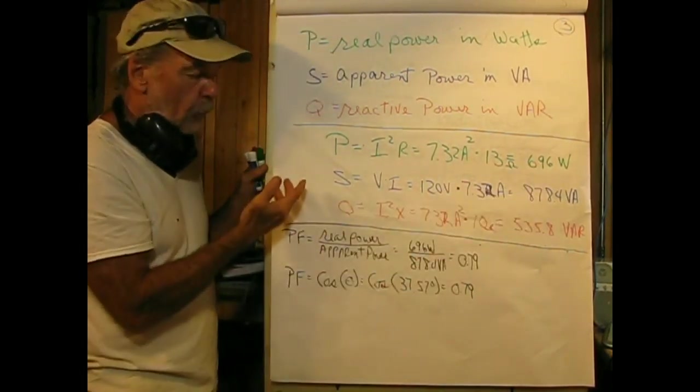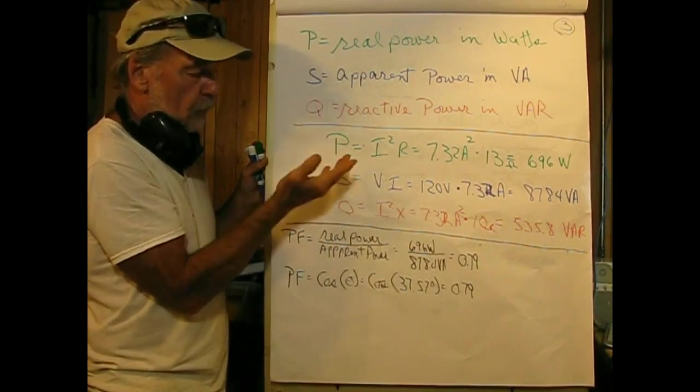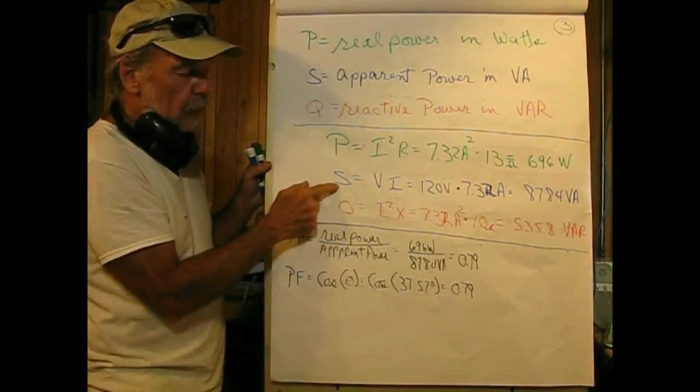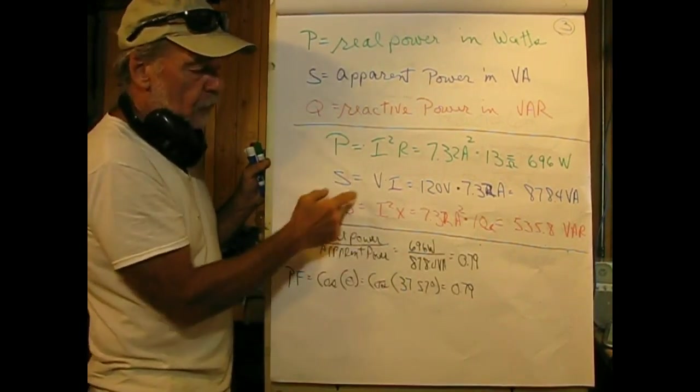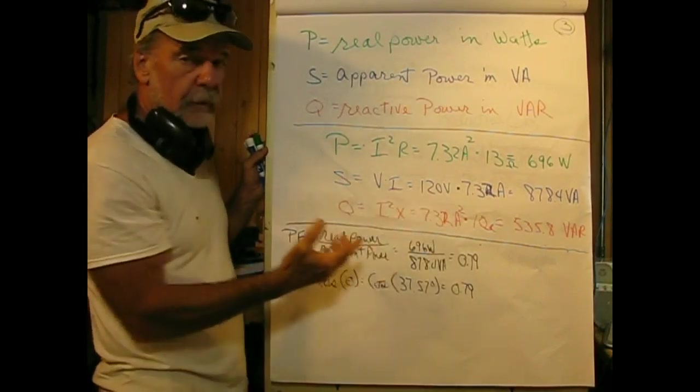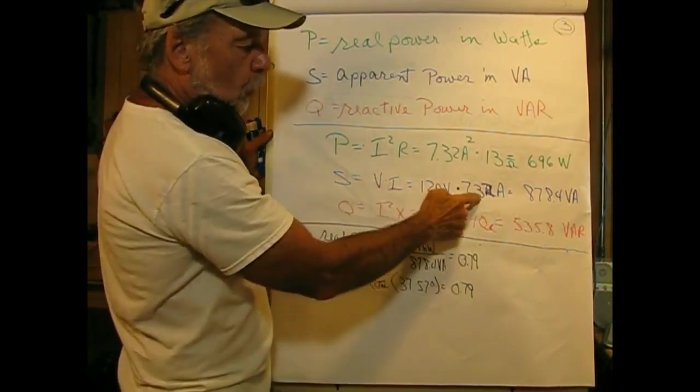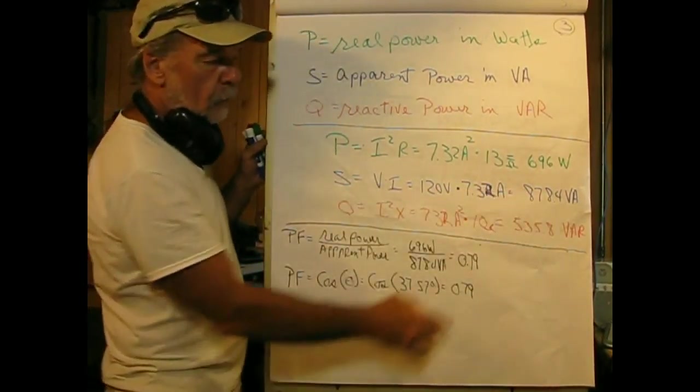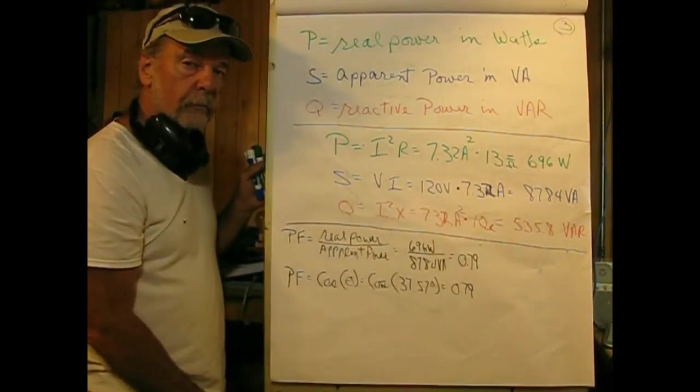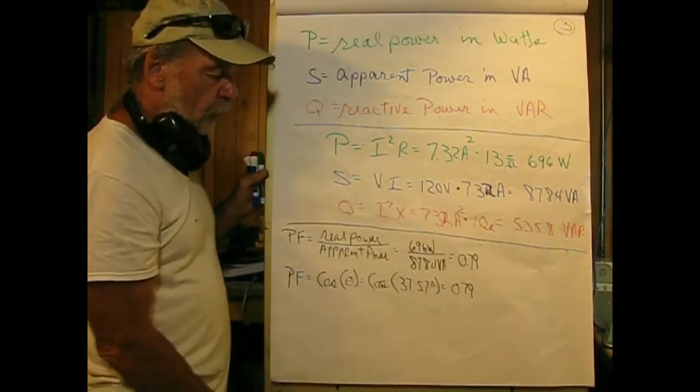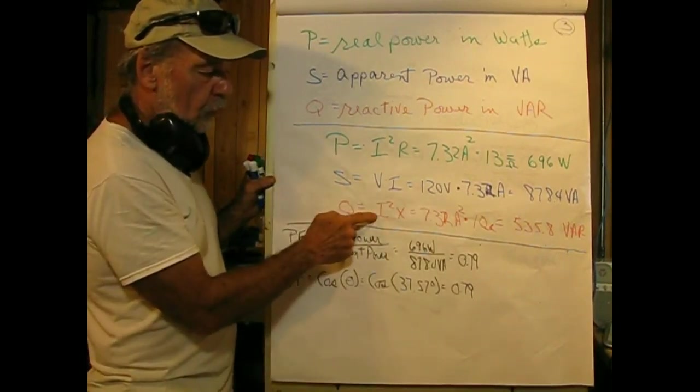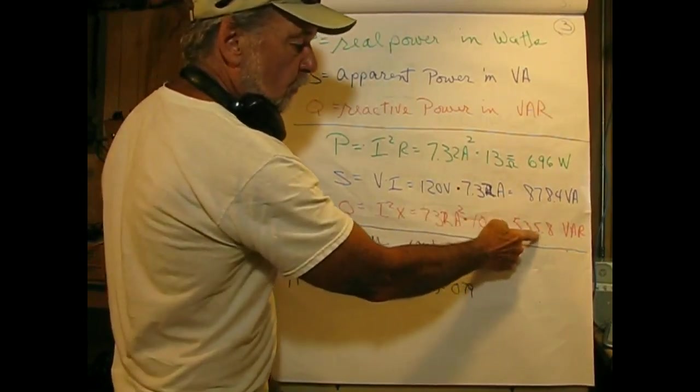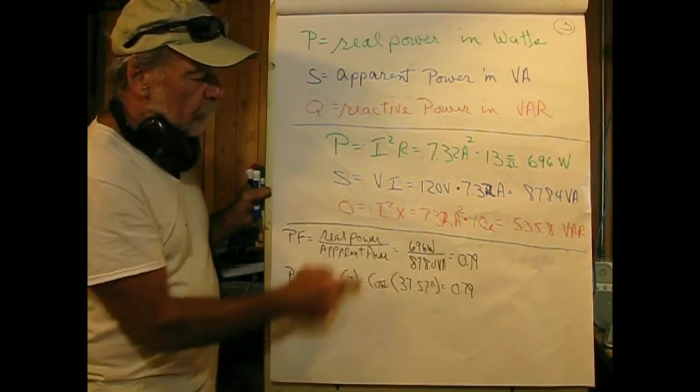If this were in a residential house with a power meter, that's what you'd be paying for. The apparent power S, easiest way is V times I, which is 120 volts times 7.32 amperes, giving us 878.4 VA. Notice there's a significant difference. Further, the reactive power Q equals I squared X, current squared times 10 ohms, gives us 535.8 VAR.